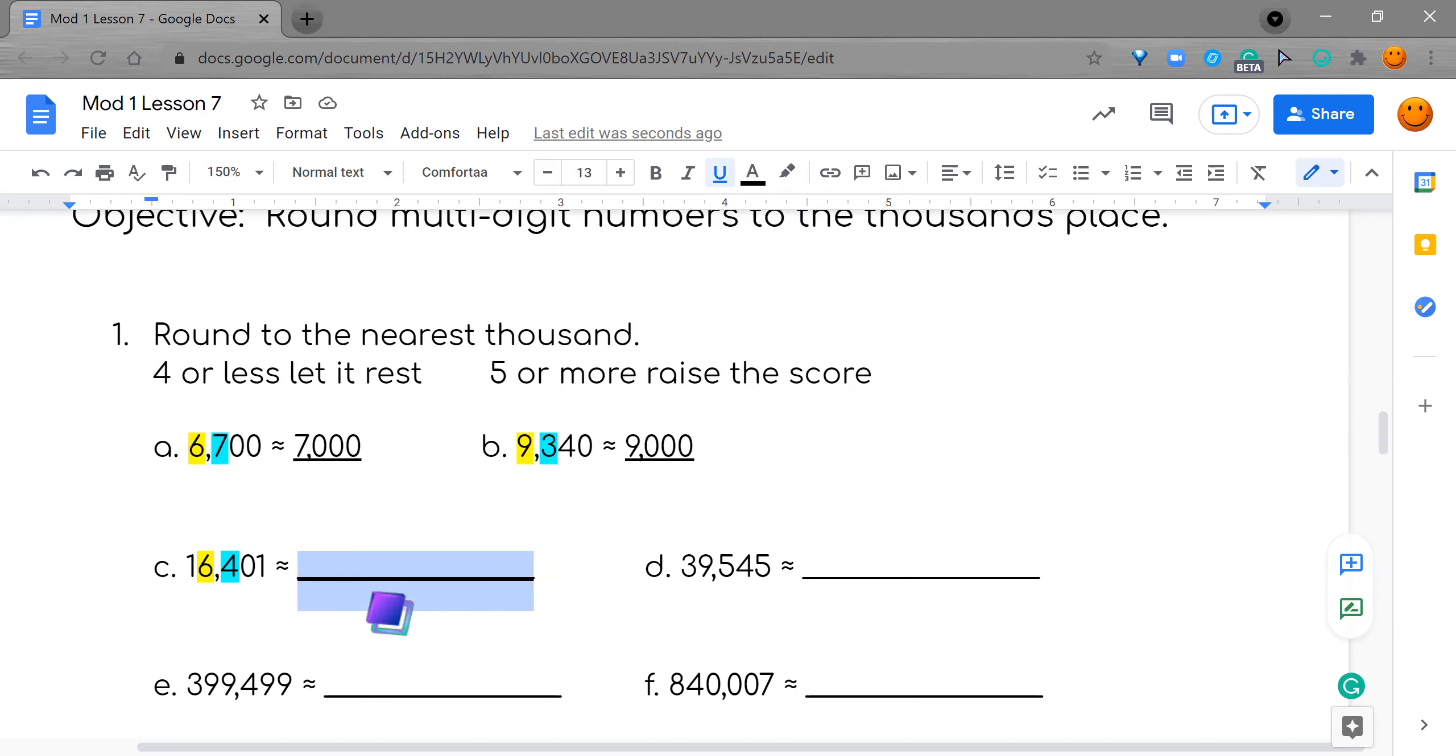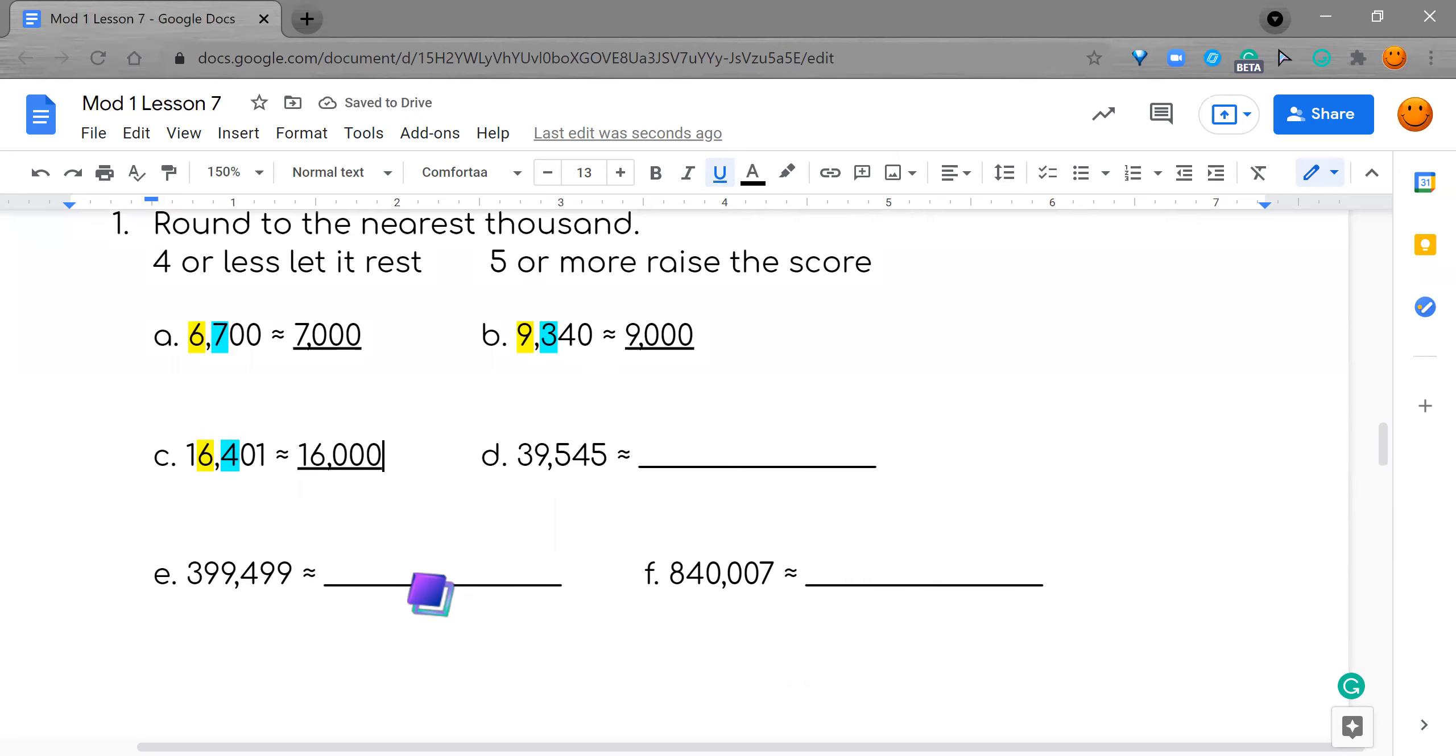But remember, there's a number in front of the six and we didn't touch that. So we're going to go ahead and write our one six, because the one before the six has to come along. Everything to the right of the six, we replace it with zeros. I have three more for you guys to practice and keep doing a great job.